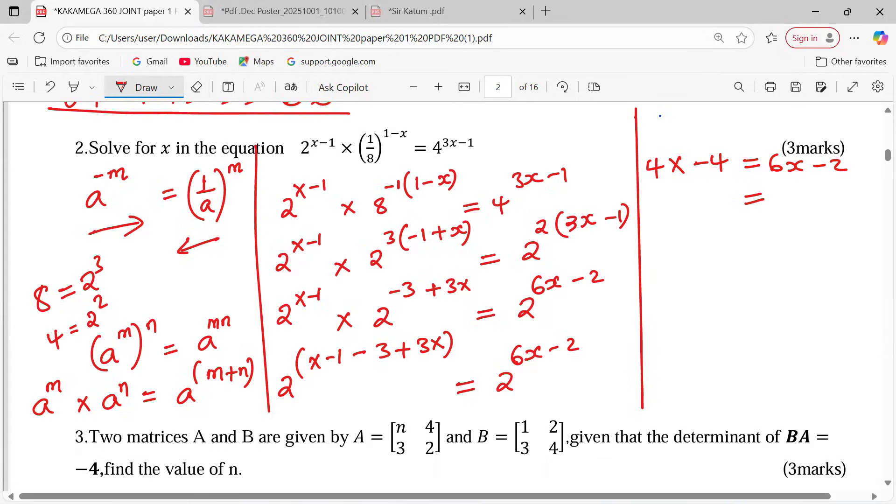6x, I subtract 4, that gives us 2x, then negative 4 plus 2. Because this is a negative 2, it becomes positive on this side. So minus 4 plus 2 becomes negative 2. And the value of x is confirmed to be negative 1, once you divide through by 2 on both sides.